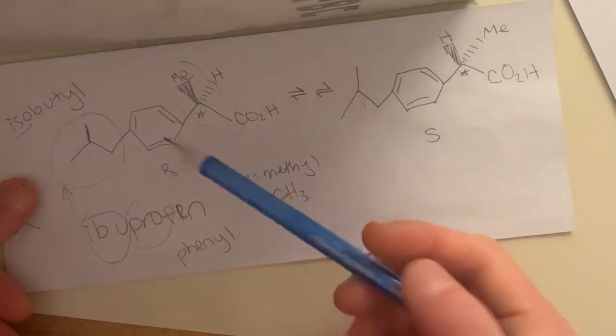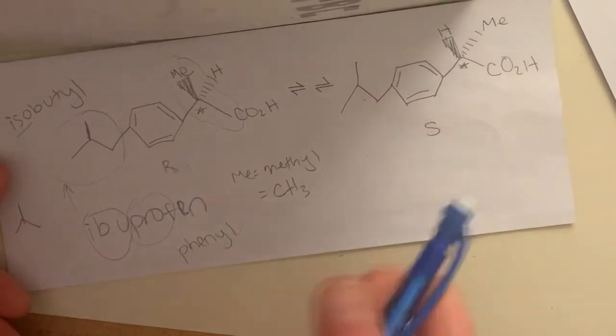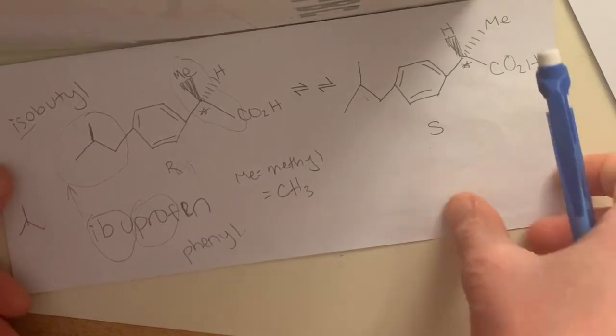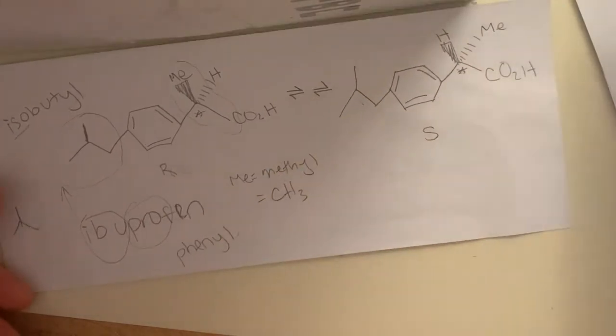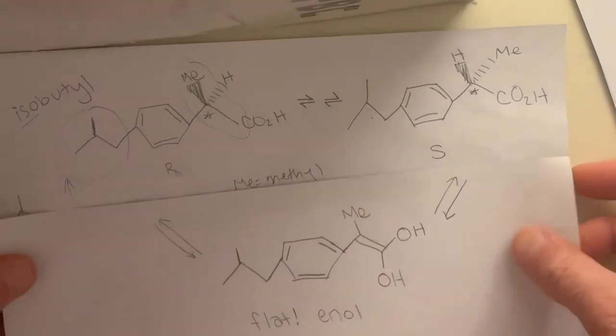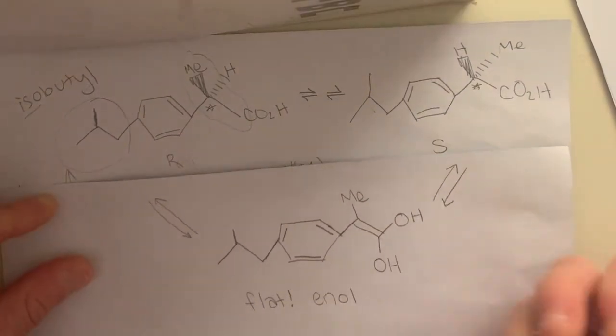And so how does it do this? Well, it needs to swap these around. And it can't just go in there and swap them. Like, you can't just go and swap them. What you have to do is it does this by making a flat intermediate. So this enol intermediate.